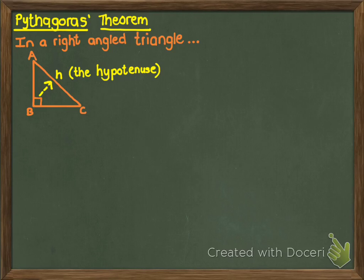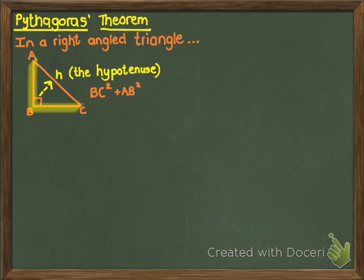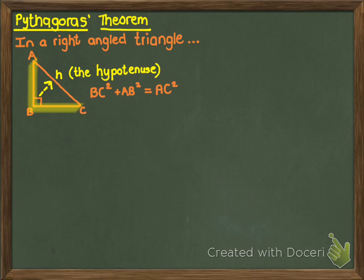Now what did Pythagoras' Theorem say? It said you will have two other sides — one of them will be BC, and if you square BC and add the other side squared, which is AB squared, you will always get the hypotenuse squared. So the hypotenuse is always by itself. It's the two shorter sides squared added together equals the hypotenuse squared.